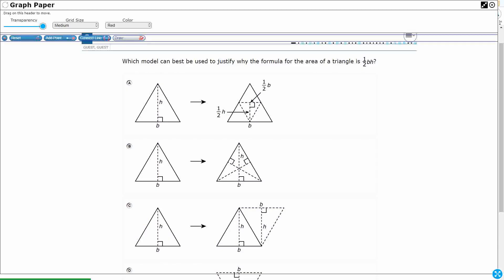Alright, so we know that if I wanted to find this, I would take one-half and multiply the base times the height and I can find the area of this triangle. But why do I have to do one-half? Well, that's what this is asking for, right?